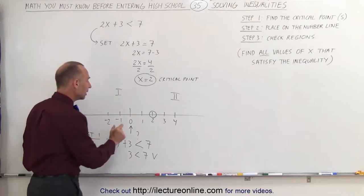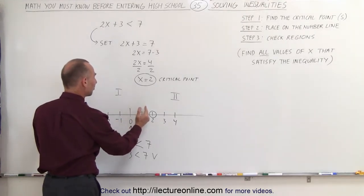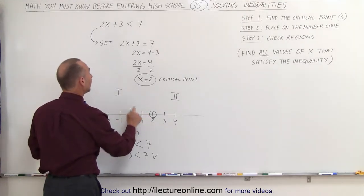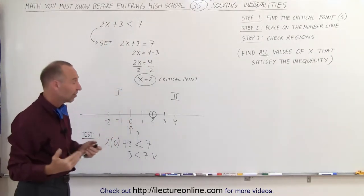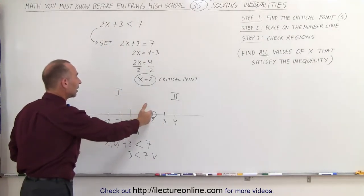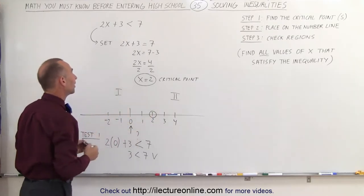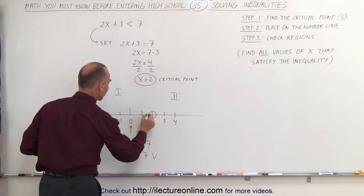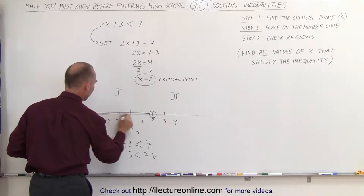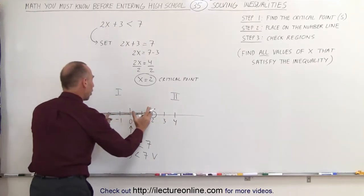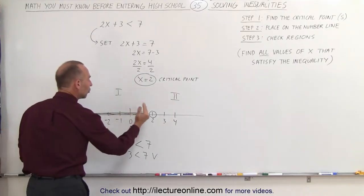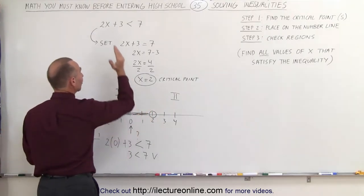That means when I plugged in a number from the left side, region number 1, into our inequality, it satisfied that inequality, which then says that all these values to the left of the number 2 satisfy the inequality. And so what we're going to do now is we're going to draw a thicker line here with an arrow, which indicates that all the values on the number line to the left of the critical point satisfy the inequality.